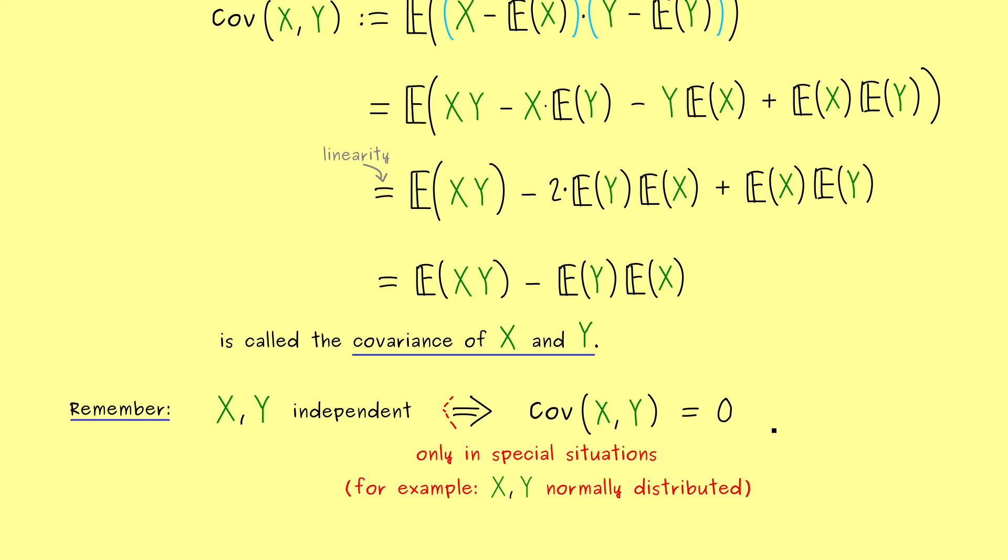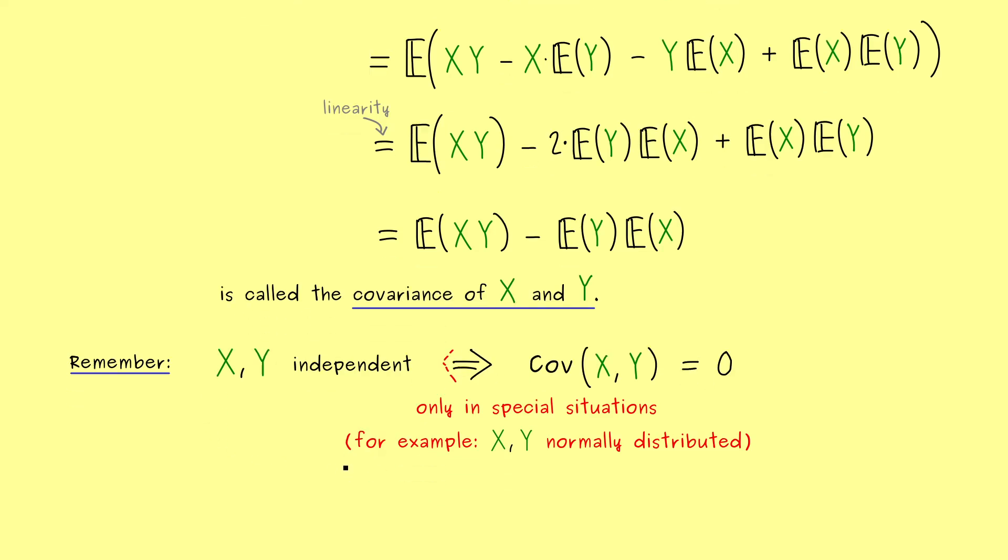Nevertheless, we always have the contraposition here, which means, if the covariance is not zero, the variables are not independent. However, now the question is, do we also know how much they are not independent?